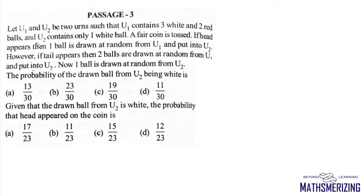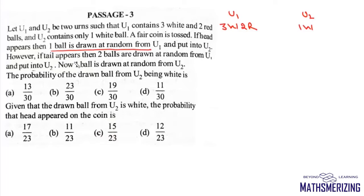Let U1 and U2 be 2 urns such that U1 contains 3 white and 2 red balls and U2 contains only 1 white ball. A fair coin is tossed. If head appears then 1 ball is drawn at random from U1 and put into U2, and if tail appears then 2 balls are drawn at random from U1 and put into U2. Then 1 ball is drawn at random from U2. The probability of the drawn ball from U2 being white is?